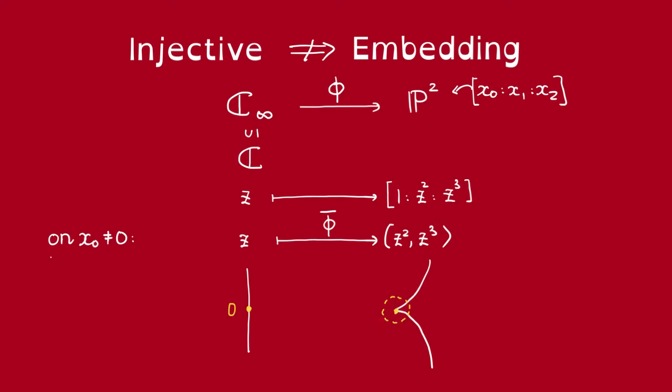In other words, the induced map here on the tangent space at the origin is not going to be injective, and let's see why that is.